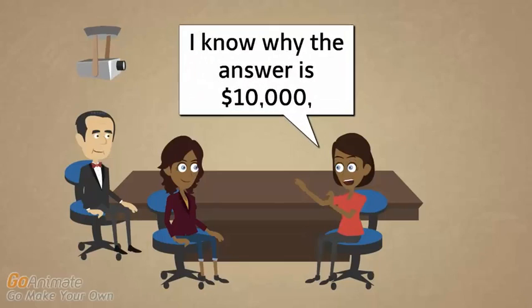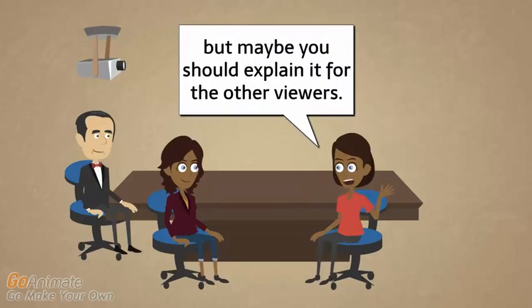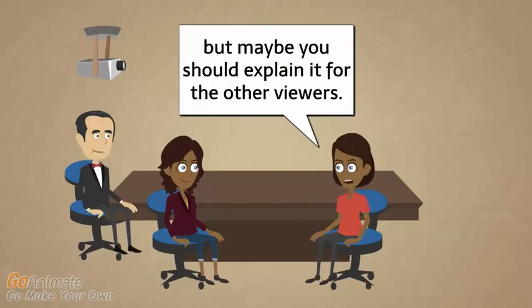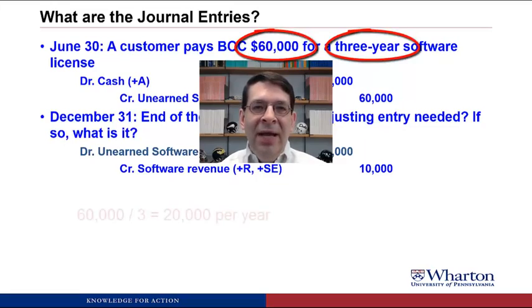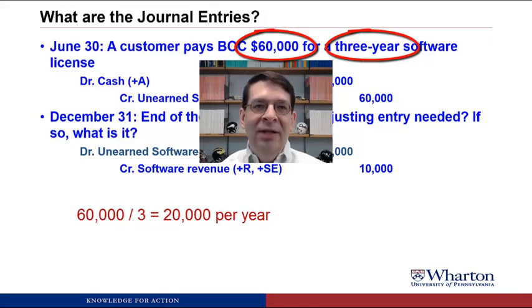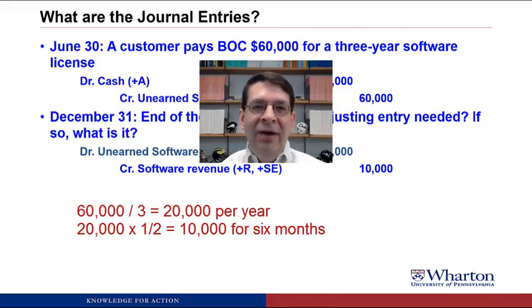Why $10,000? BOC earns $60,000 over three years. On a straight-line basis, that's $20,000 per year. It's only been six months, so $20,000 times one-half equals $10,000 of revenue recognized for the six-month period.